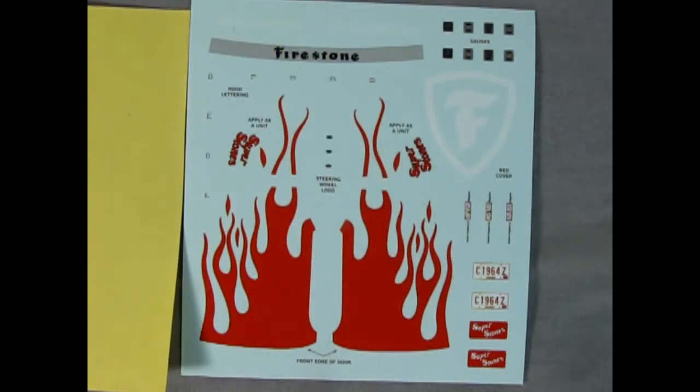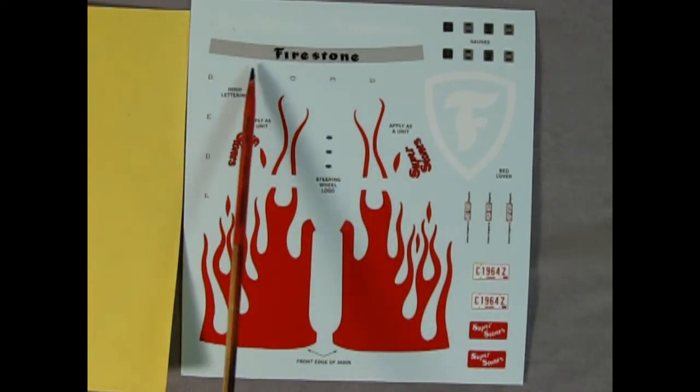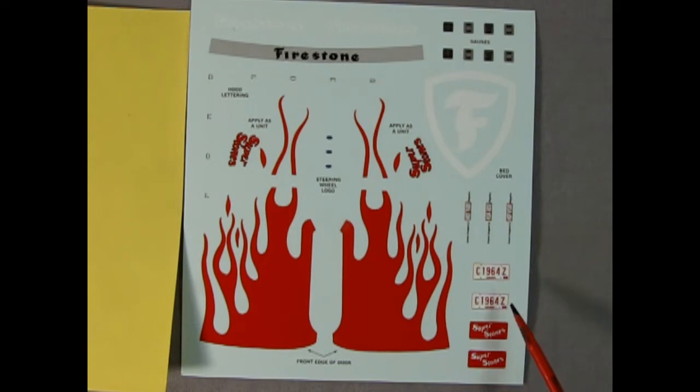And now the moment you've been waiting for. What do the decals look like? So let's just fold up our paper and see. There we have it. Our nice red flames as well as the big Firestone emblem which goes on that tonneau cover. There's our Super Stones decal which will go on the side as well as the Firestone visor decal. And we have Ohio license plates C1964Z.